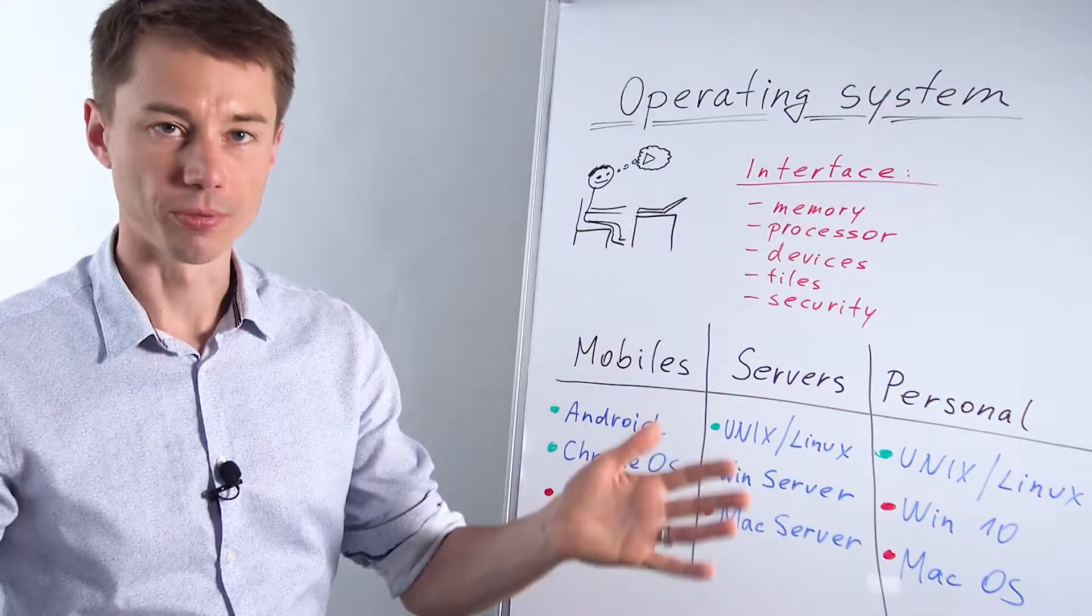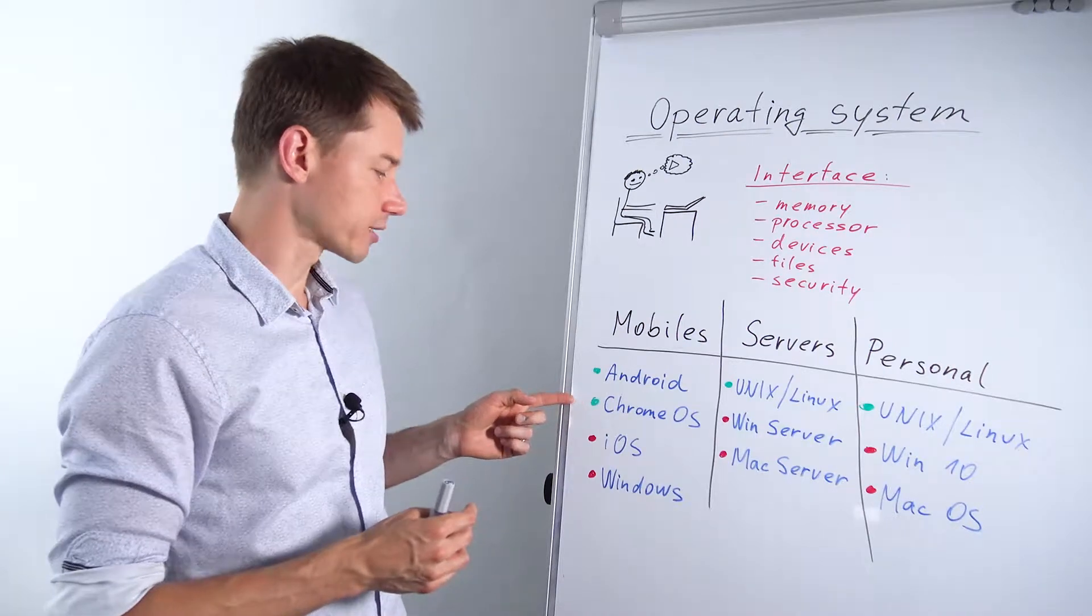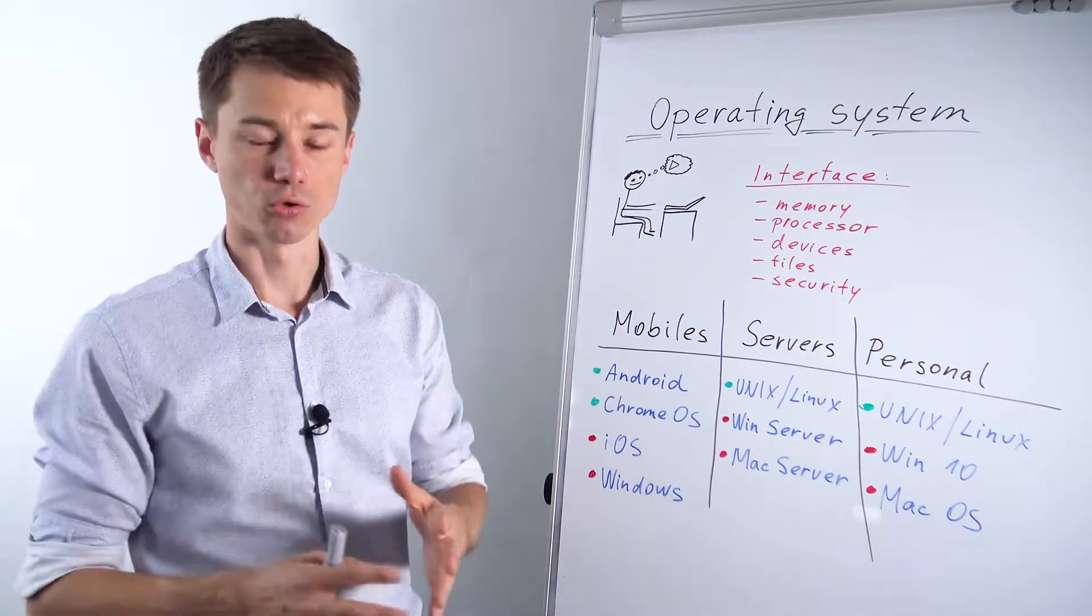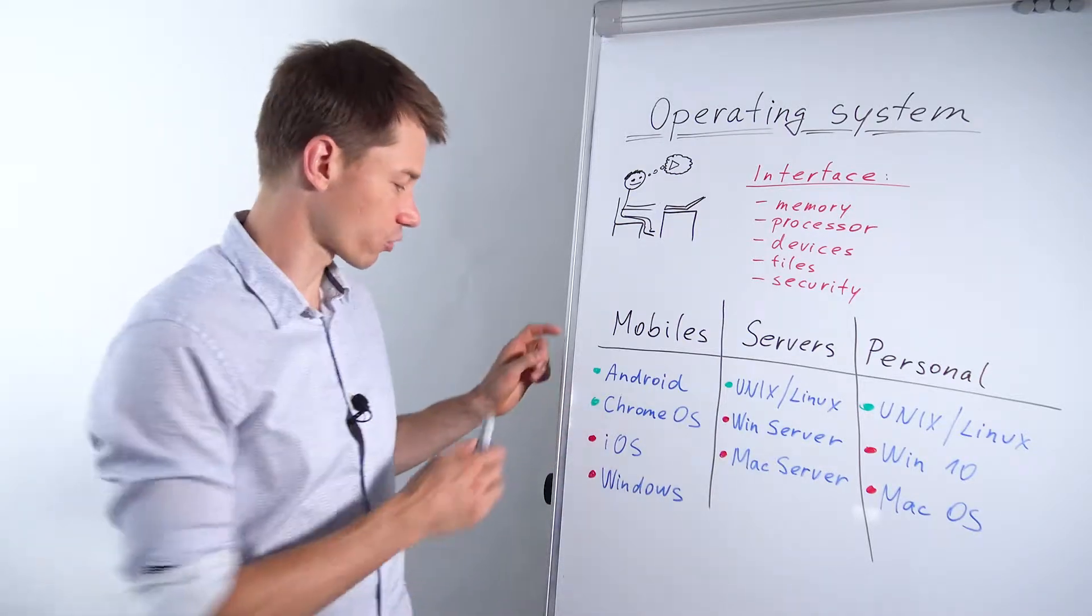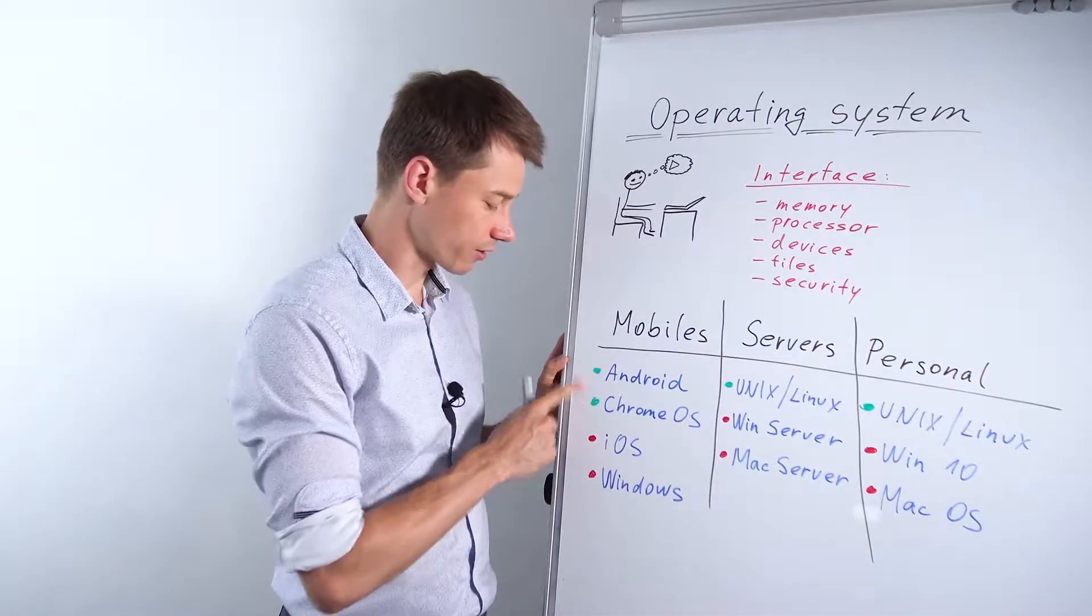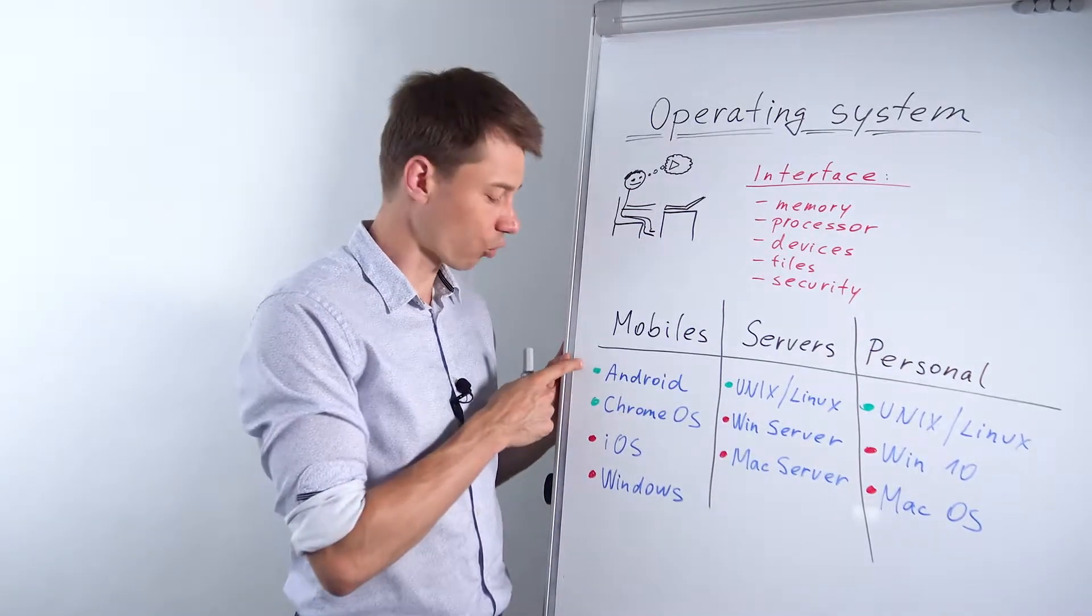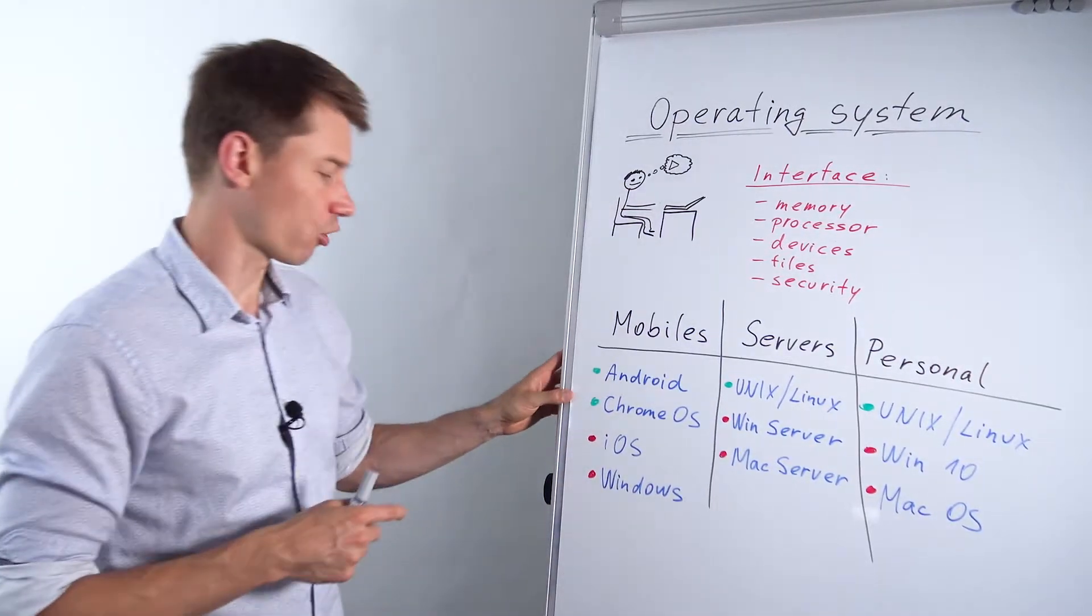Chrome OS is also an operating system by Google. They open sourced it which is great, so they have here these two green dots that indicate open source operating systems.